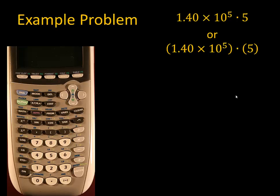Our keystrokes for the calculation are 1.40 second, which we get by pushing that button over there, EE, which we get by pushing that button, 5. Now we are done entering the first number, and the calculator display will look like this.